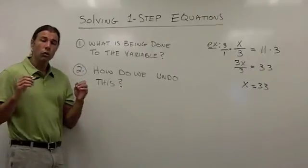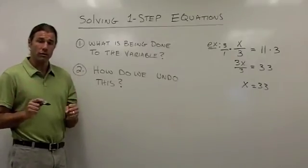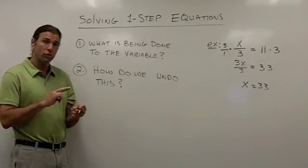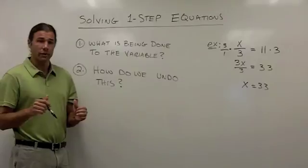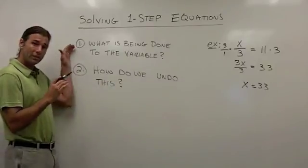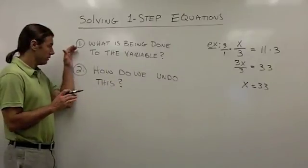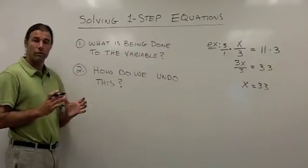So when we're solving one-step equations, we can ask ourselves two questions to isolate the variable. First question: what is being done to the variable? And the second question: how do we undo this?